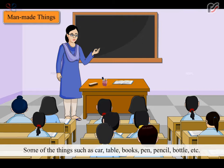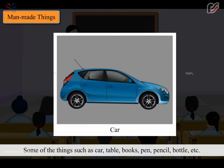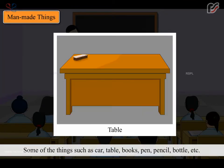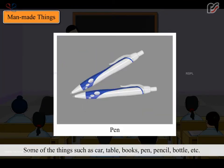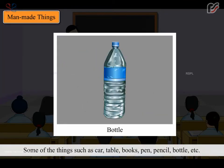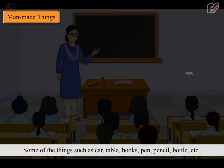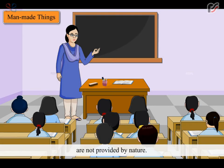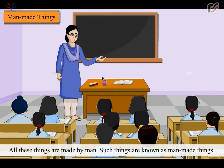Some things such as car, table, books, pen, pencil, bottle, etc. are not provided by nature. All these things are made by man. Such things are known as man-made things.